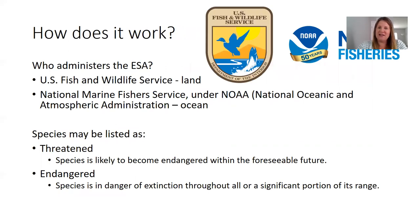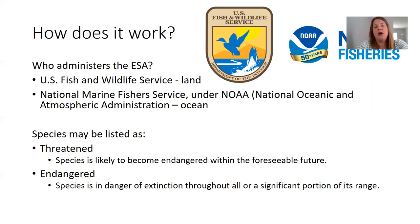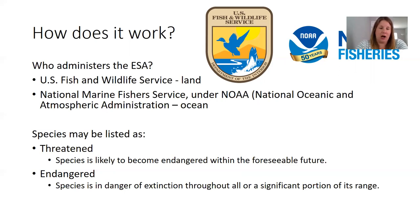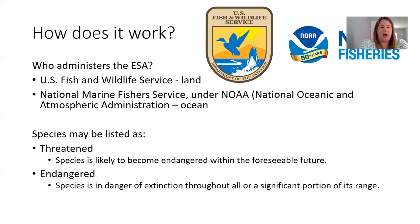So how does it work? The ESA is administered by two different organizational bodies. You have the U.S. Fish and Wildlife Service, which generally covers land and freshwater species, and then the National Marine Fisheries Service, which falls under NOAA and covers ocean species. Species are listed under two different types of listing: threatened species — those likely to become endangered within the foreseeable future — and endangered species — those currently in danger of extinction throughout all or a significant portion of their range.